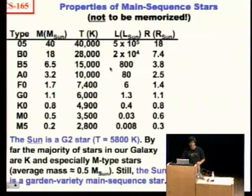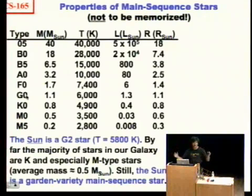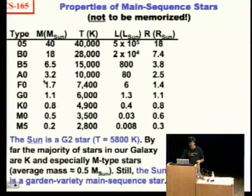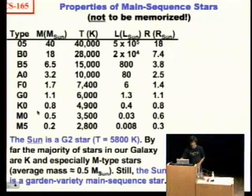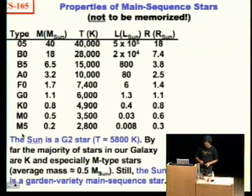The Sun is a pretty typical star — it's a G2 star, sort of in the middle of this range. Stars more massive than the Sun are actually pretty rare. The majority of stars are actually M stars, little M dwarfs, and there are some K stars as well. But still, our Sun can be considered a garden-variety star.